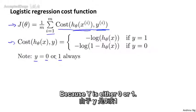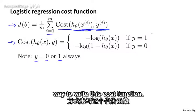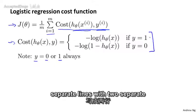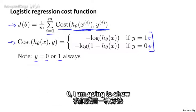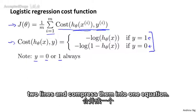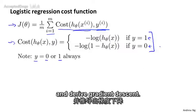Because y is either 0 or 1, we'll be able to come up with a simpler way to write this cost function. And in particular, rather than writing out this cost function on two separate lines with two separate cases for y equals 1 and y equals 0, I'm going to show you a way to take these two lines and compress them into one equation. And this will make it more convenient to write out a cost function and derive gradient descent.